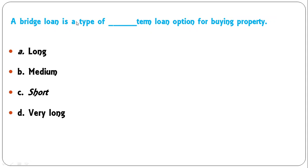A bridge loan is a type of — long-term, medium-term, short-term, or very long-term — loan option for buying property? A bridge loan is given for a short period. For example, if you want to sell your old house and buy a new one, there may be a gap. You can take a bridge loan, though it usually carries a high interest rate. So C — short term — is the correct answer.